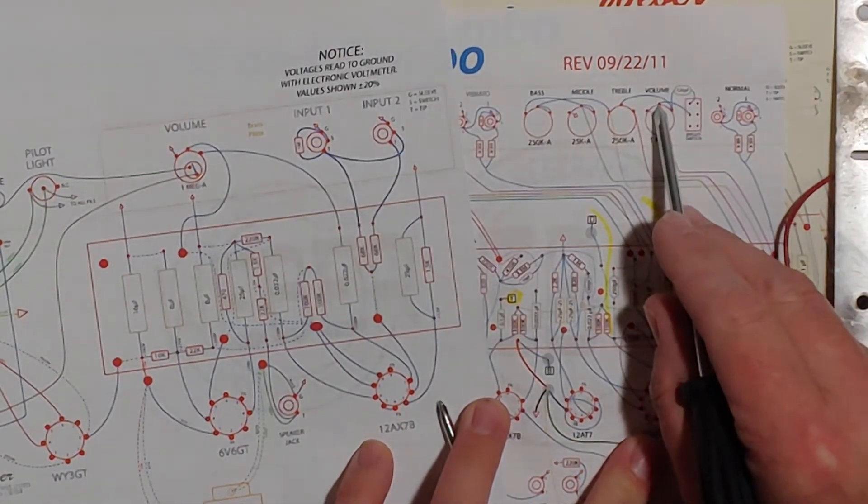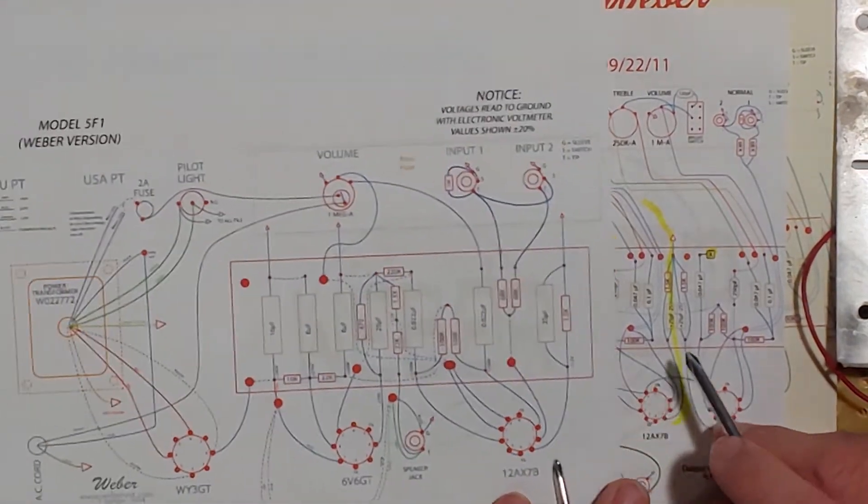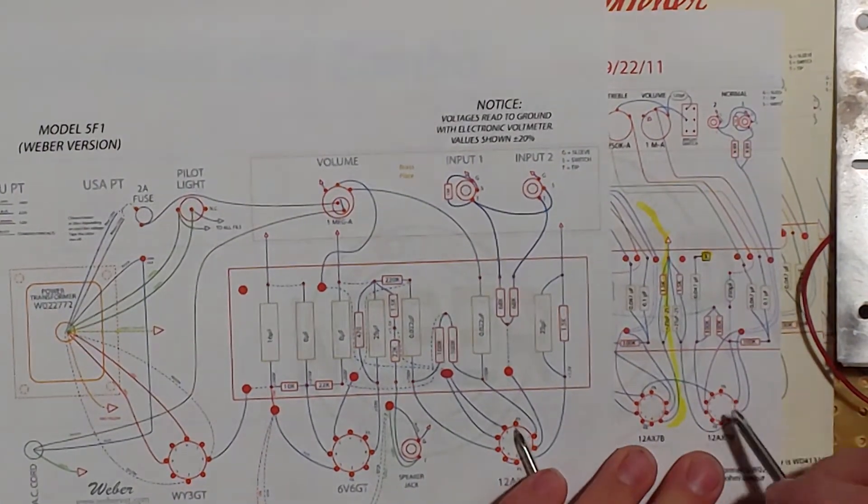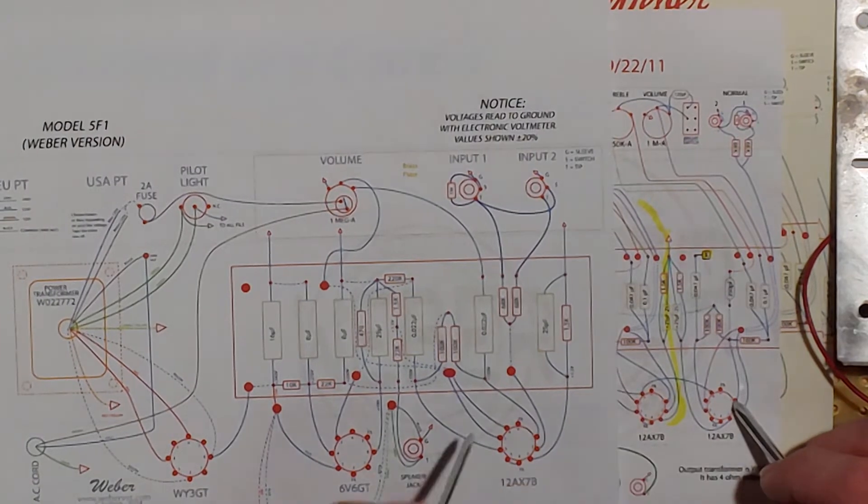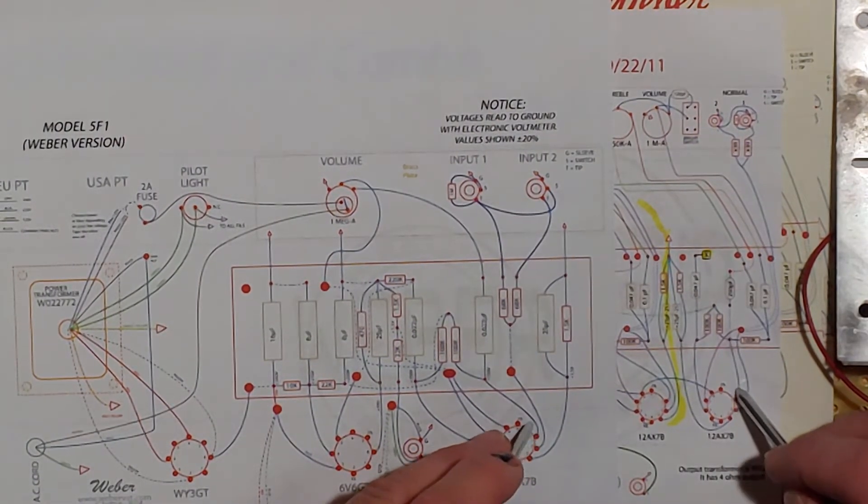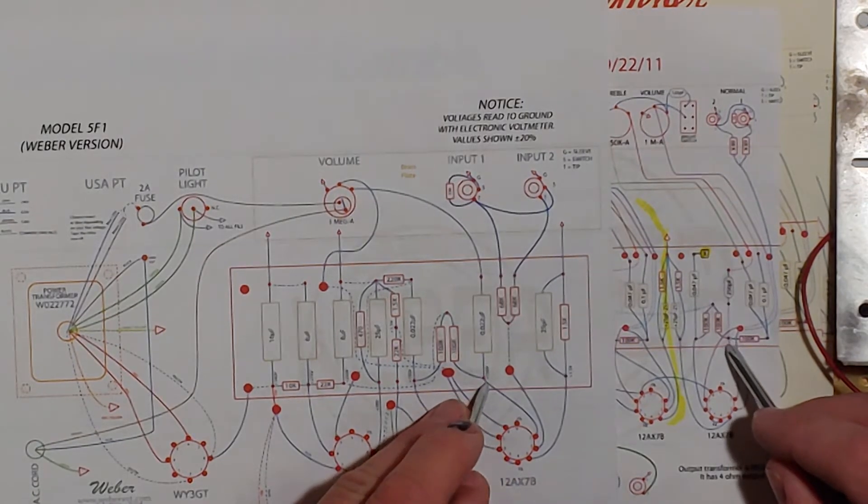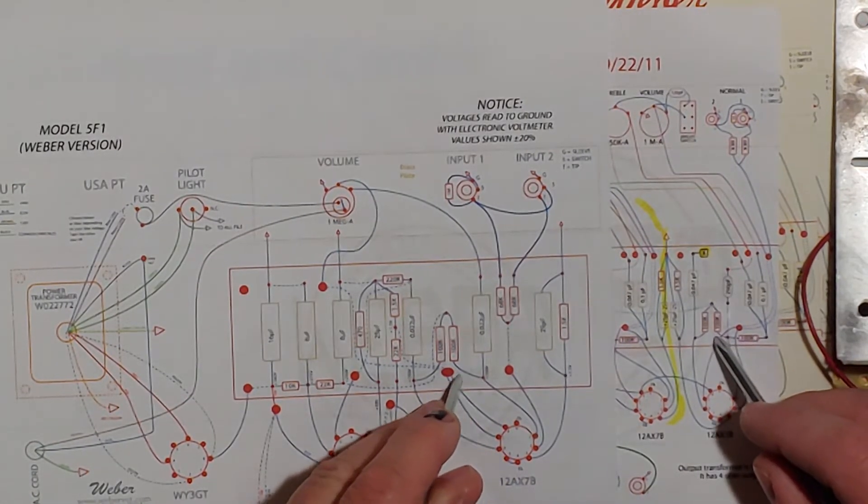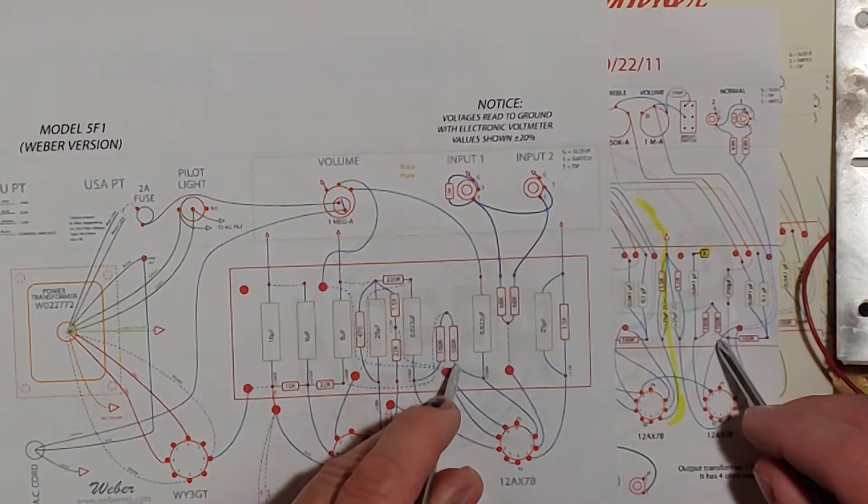All the way to the middle leg on the volume. Now the other one pin one let's follow pin one because this is going to be much different. Pin one goes up on both of them it goes to the junction point on both of them. If you go to the left it goes to this 100k resistor we're going to leave that there.